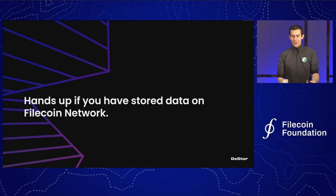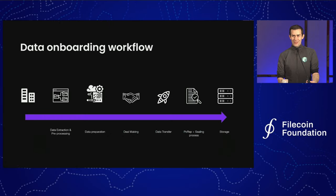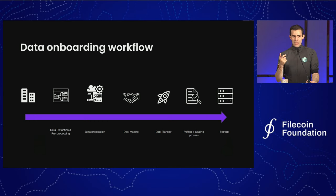Hands up for those of you who have stored data on Filecoin. There's a couple — that's good. For those of you who have, you'll already know that the journey looks something like this. There's a few steps involved. You need to process your data and prepare it, getting it into a content-addressed format and then into a deal format. Right now, what Filecoin is generally taking is that data uploads are in 32-gigabyte segments. So if you've got your data not in 32-gigabyte segments, which is very common, there's some transformation to get it into chunks of that size.